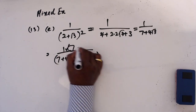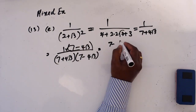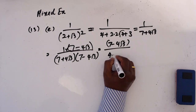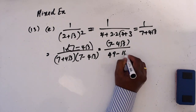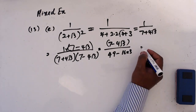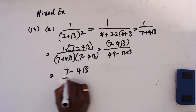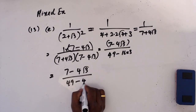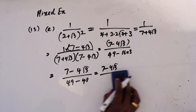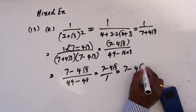7 multiplied by (7 - 4√3). This becomes 7 - 4√3 in the numerator, and the denominator becomes 49 - 48 which is 1. So the result simplifies, giving 7 - 4√3.